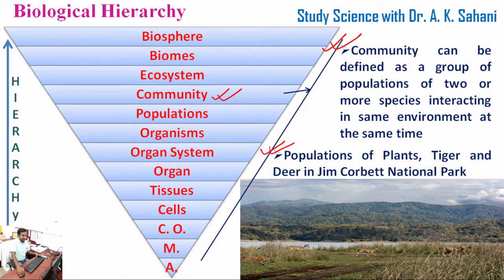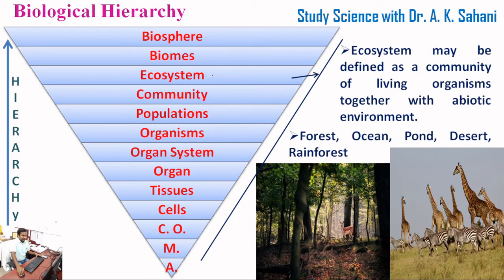The next level of biological hierarchy is ecosystem. Ecosystem may be defined as a community of living organisms together with their abiotic environment. Forest ecosystem, ocean ecosystem, pond ecosystem, desert ecosystem, and rainforest ecosystem are some examples of ecosystems.